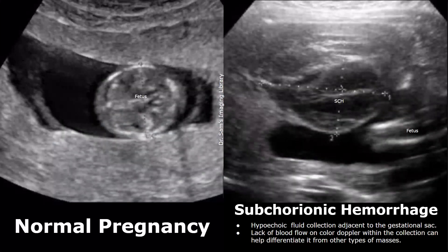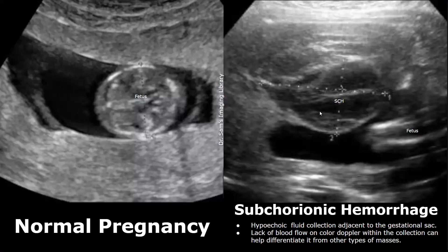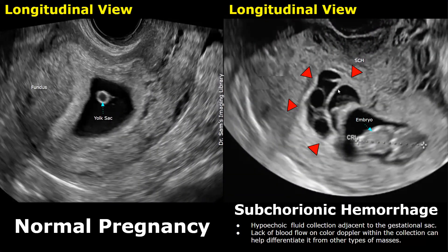This was a subchorionic hemorrhage. It appears as a hypoechoic heterogeneous fluid collection and did not show any internal vascularity on color Doppler. This hemorrhage appears multiloculated — this type of appearance can also be seen in an SCH. It is a large hemorrhage and carries a high risk of pregnancy complications.